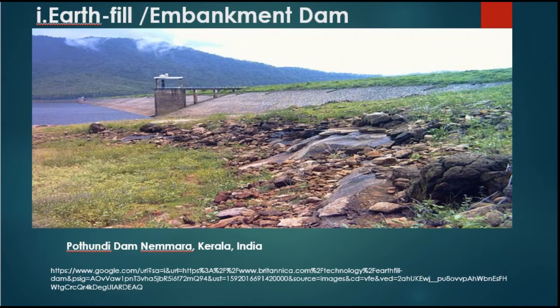The first type of dam on the basis of material is the earth fill or embankment dam. In this type of dam, compacted soil constitutes more than 50 percent of the placed volume of material. They are constructed mainly of selected engineering soil, compacted uniformly and intensively in relatively thin layers at controlled moisture content.